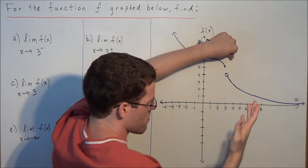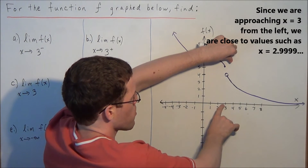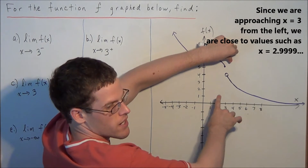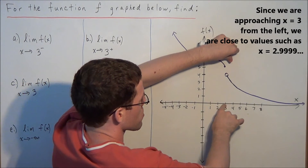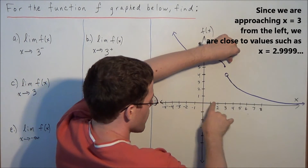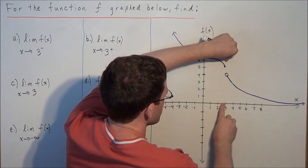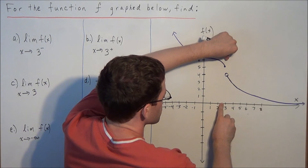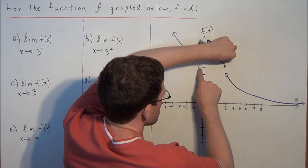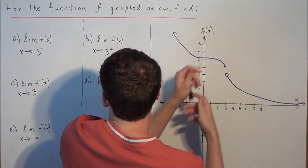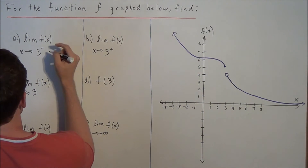One particular value we may be approaching would be 2.99999 — getting really close to 3 from the left side. So the limit as x approaches 3 from the left is going to be 5. We can set this equal to 5.